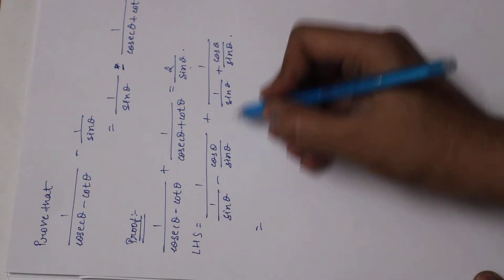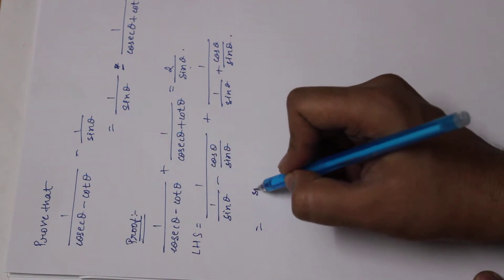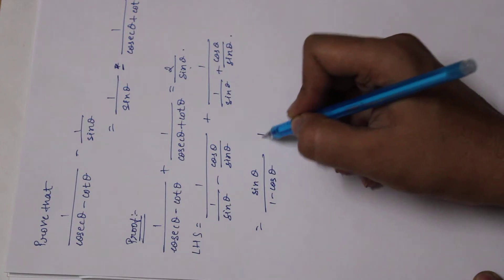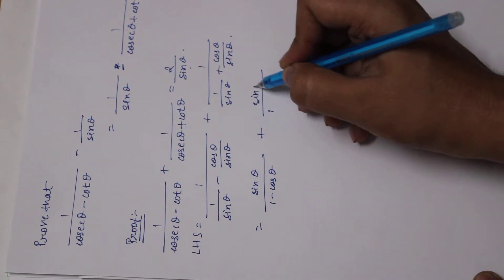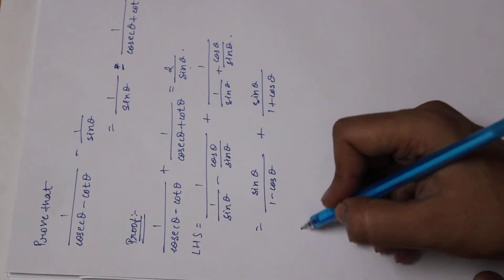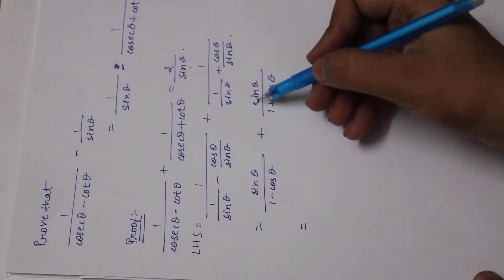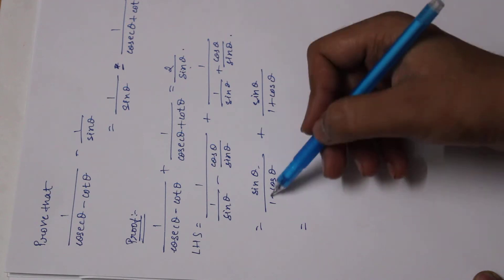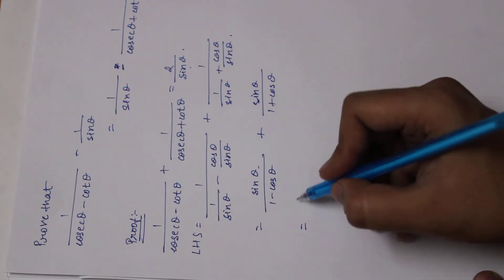Sin theta is common so we take it into the numerator: sin theta upon (1 minus cos theta) plus 1 upon — and over here also sin theta — 1 upon (1 plus cos theta). So I'm having the same numerator right now, but are my denominators the same? No, so I have to cross multiply.